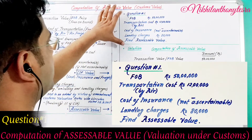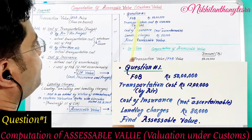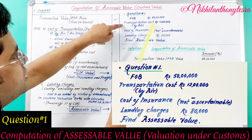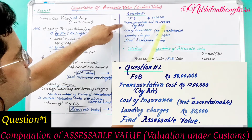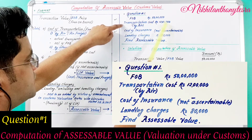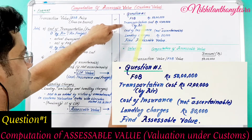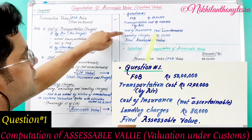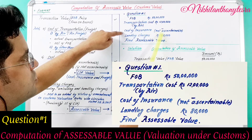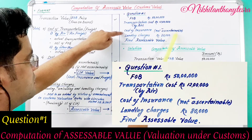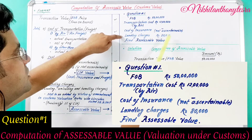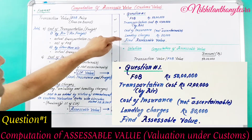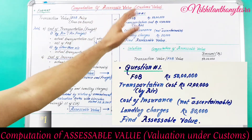Suppose the given question is this: FOB is given as Rs. 50 lakhs. Transportation cost is given as Rs. 12 lakhs, by air. Cost of insurance is not given — not ascertainable. Landing charges is given as Rs. 80,000. Find the accessible value.